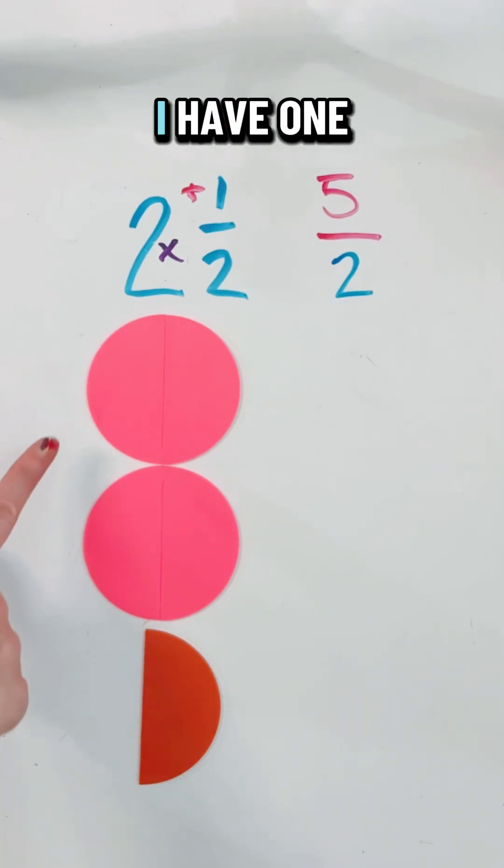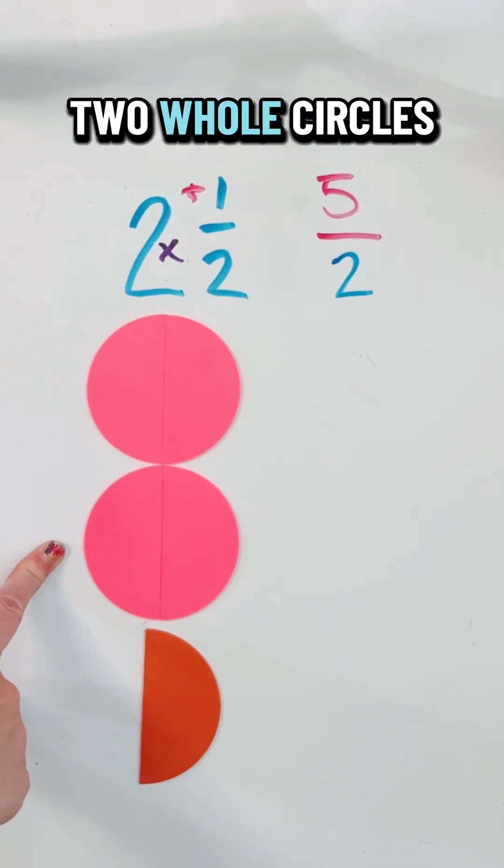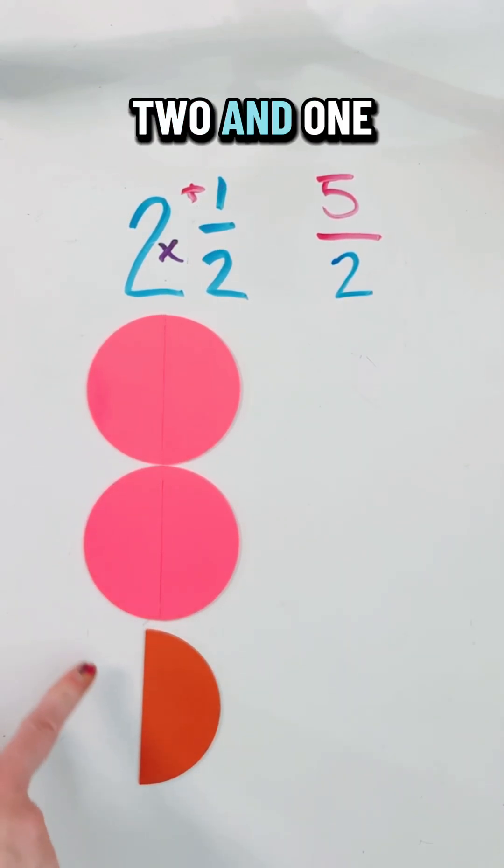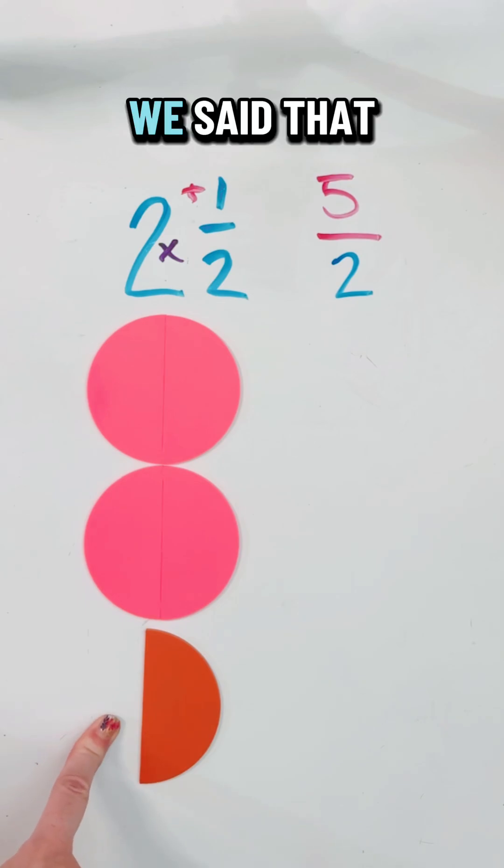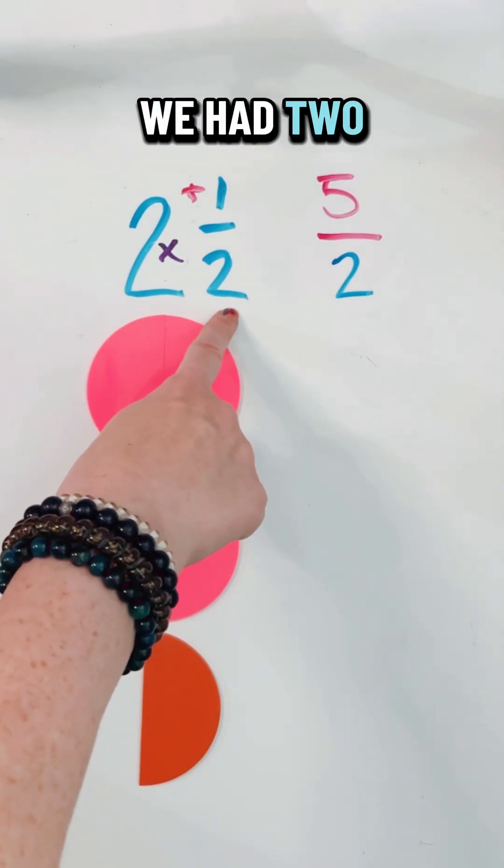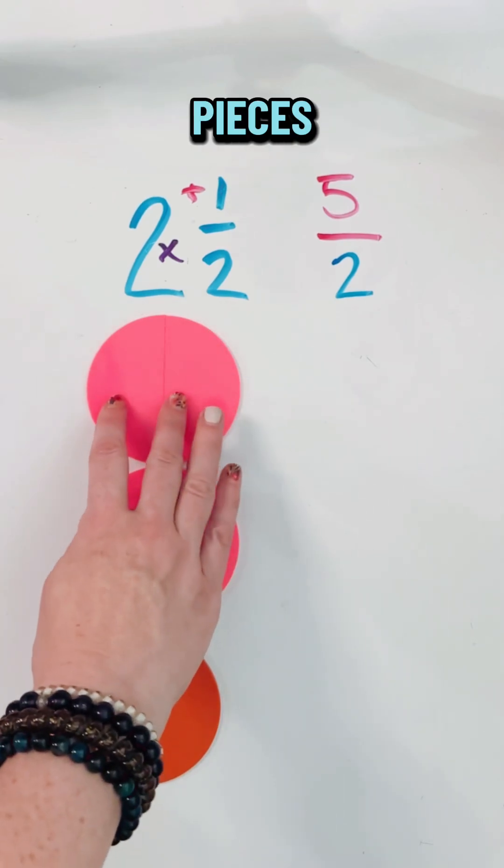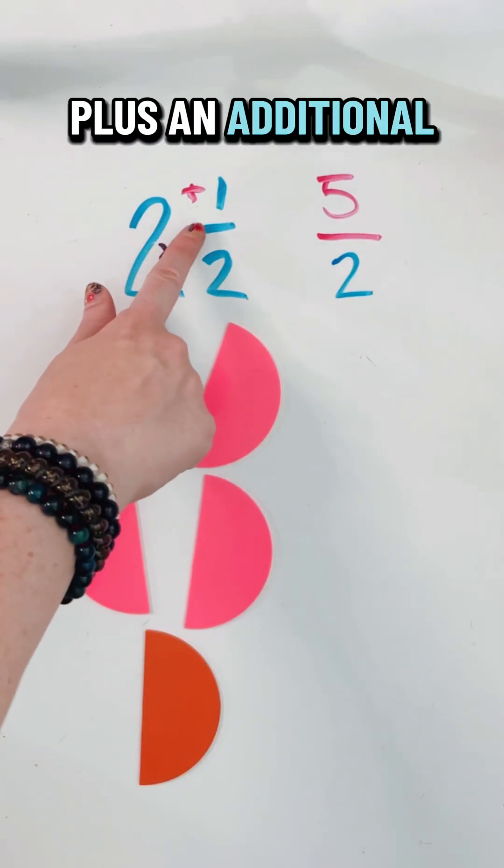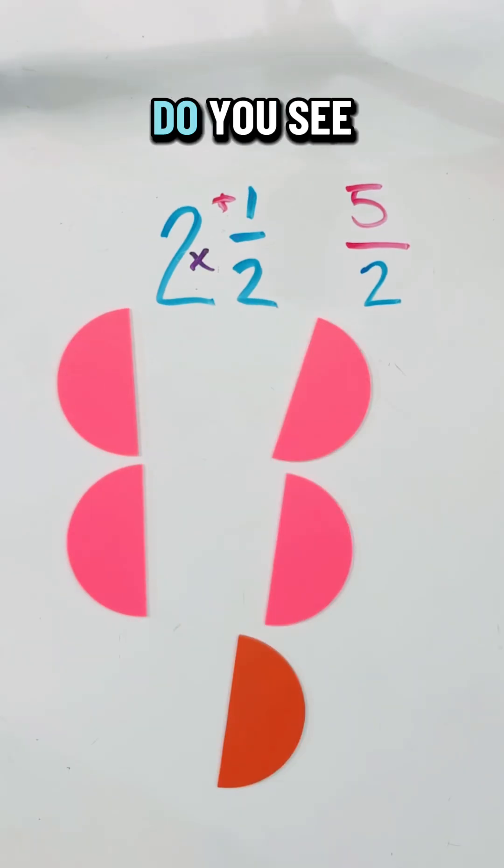Let's try it with a visual. I have one, two whole circles and half of a circle, so I have two and one half. We said that we had two groups of two pieces plus an additional one half. Do you see the five halves?